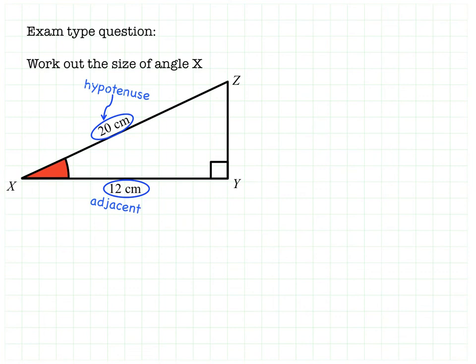So we now need to think, out of our trig ratios sine, cos, and tan, which of those is relevant to a problem with the adjacent and the hypotenuse. And the answer to that is cos, because cos equals adjacent over hypotenuse.